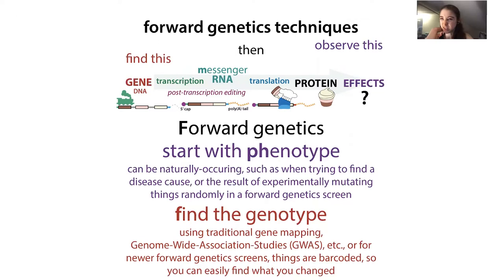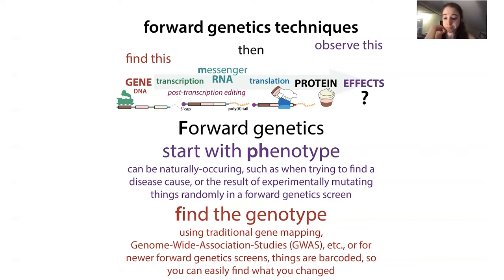Nowadays you can make changes that are barcoded, so you can mark the changes you make and make them easier to find. If you do a screen where you're making a lot of changes but leaving behind a mark, then when you find a cool phenotype, you can see what marks are associated with it — making it easier to find what you changed. You can do big barcoded CRISPR-type screens. Let's start with more traditional gene mapping approaches.